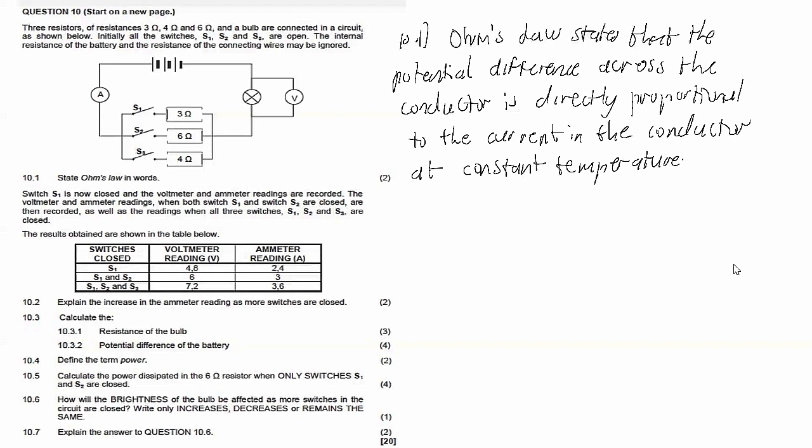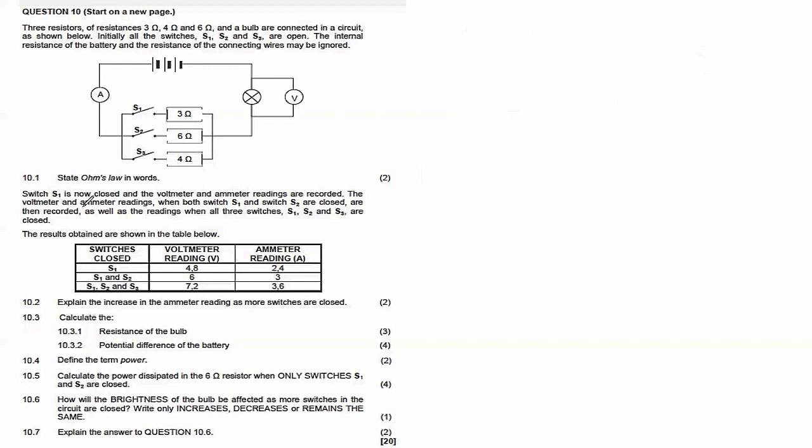Switch S1 is now closed and the voltmeter and ammeter readings are recorded. Then the voltmeter and ammeter readings when both S1 and S2 are closed are recorded. Again, the readings when all three switches S1, S2, and S3 are closed are recorded. So the results are shown in the table: close S1 — record ammeter and voltmeter readings; close S1 and S2 — record both readings; close all three — record both readings.